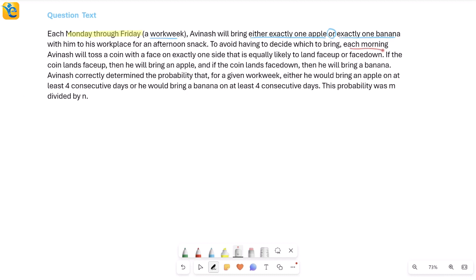To avoid having to decide which to bring, he doesn't want to take this decision, so each morning he will toss a coin and this coin has a face on it on exactly one side. The other side does not have a face. The coin is equally likely to land face up or face down, which means the probability of being face up and probability of it landing face down is equal.